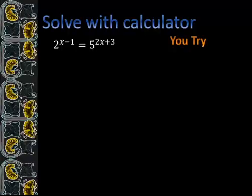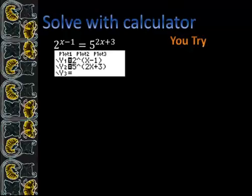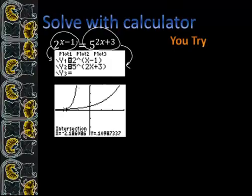I want you to try this one just like we did the last one — press pause, solve it, and then play to see the solutions. Once again I took the left side and put it into y1, and the right side into y2. Here are my two graphs, and they only intersect at one place. So it turns out that my solution, just one, is approximately negative 2.19. Thank you!